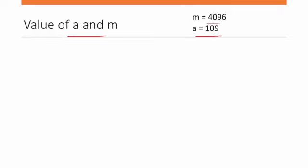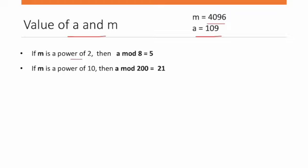Now we will find a suitable value for a. Let's try a = 109. Given m = 4096, which is 2¹², this is a power of 2, so the first condition is satisfied.